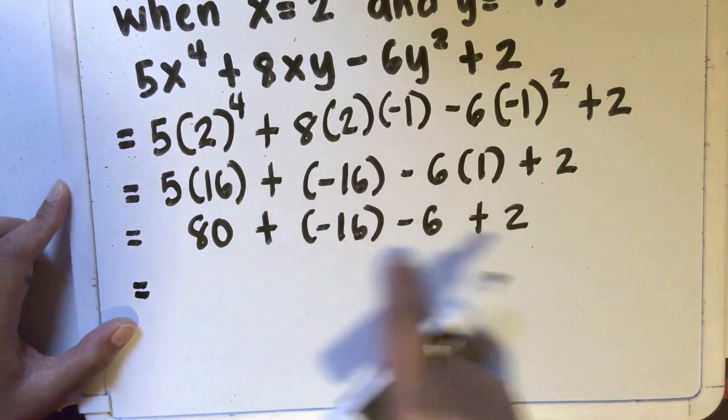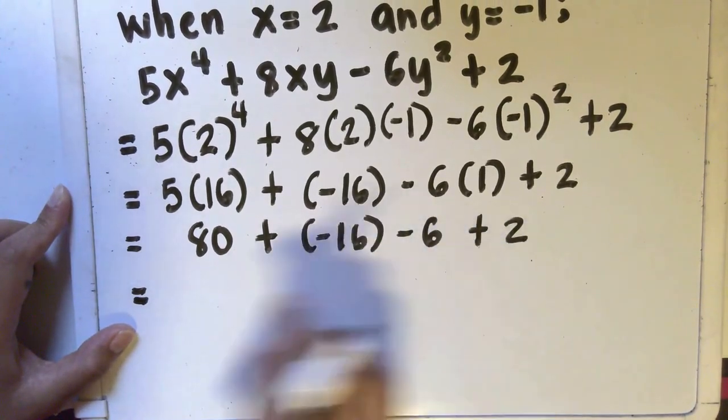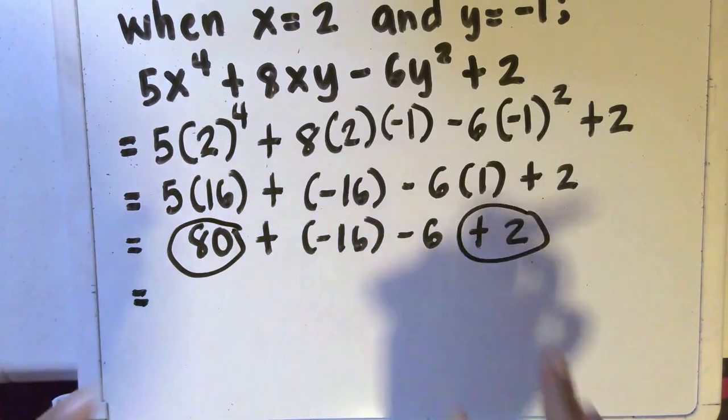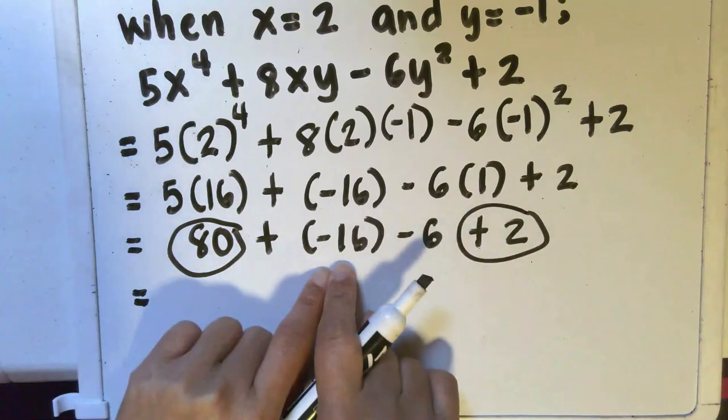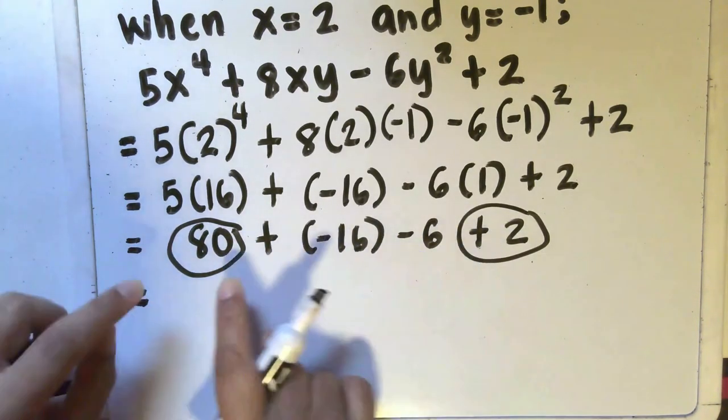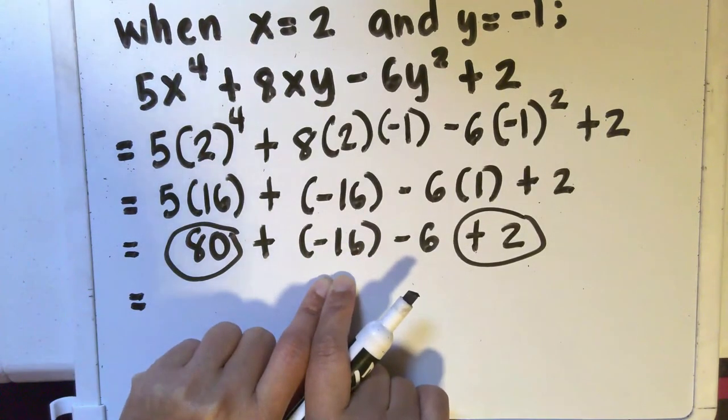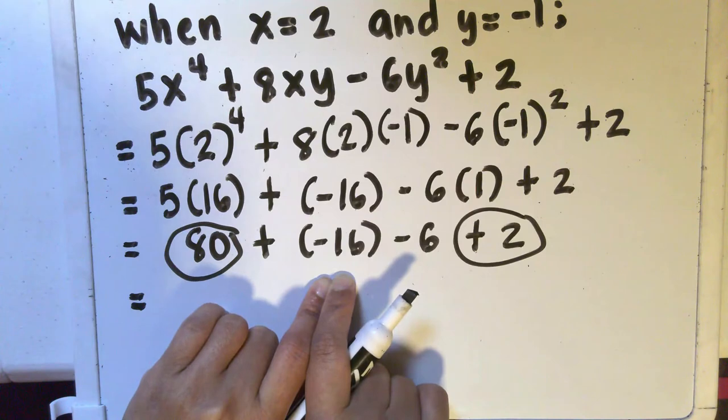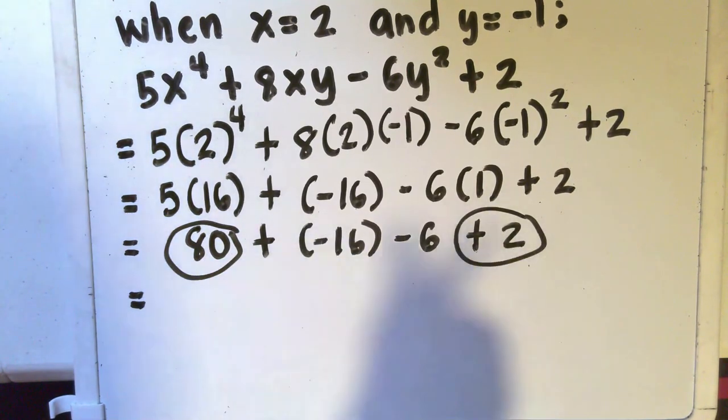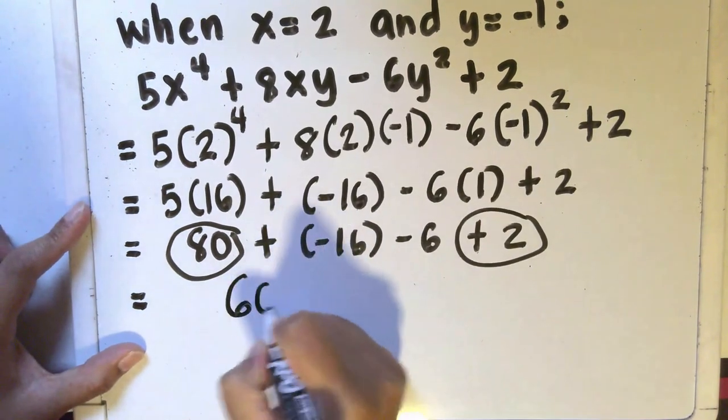And then we can combine all of these. Now, there are different ways to do this. You can do 80 plus 2, combine those with the same signs first, and then negative 16 plus negative 6. Or you can do 80 plus negative 16, applying the rules in adding integers, and then minus 6, and whatever answer you get, plus 2. Whatever method you use, the result should be equal to 60.